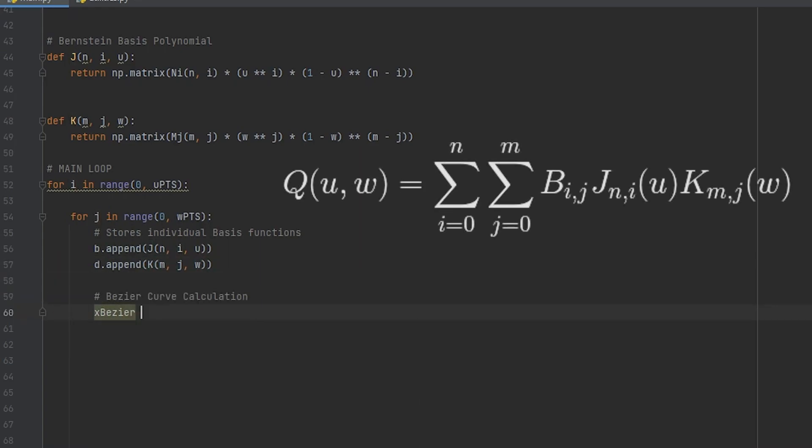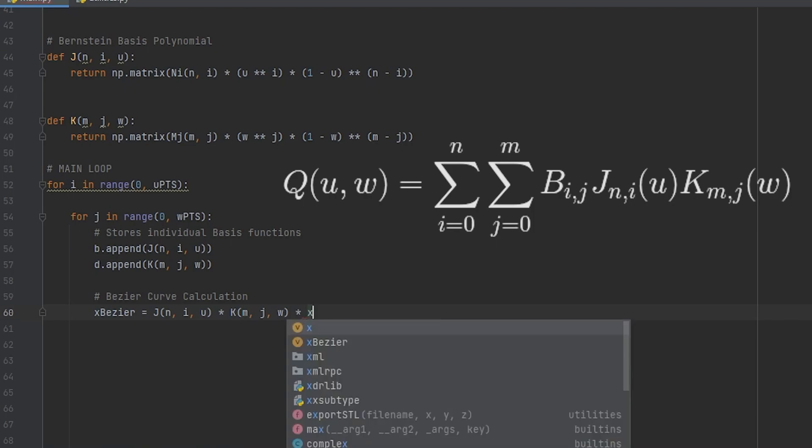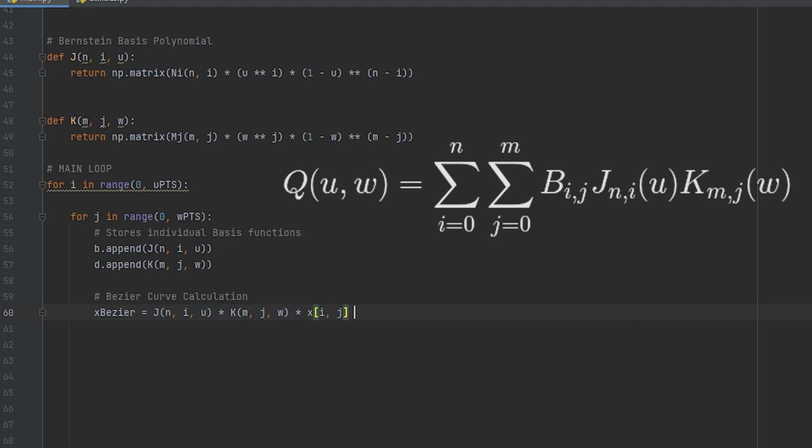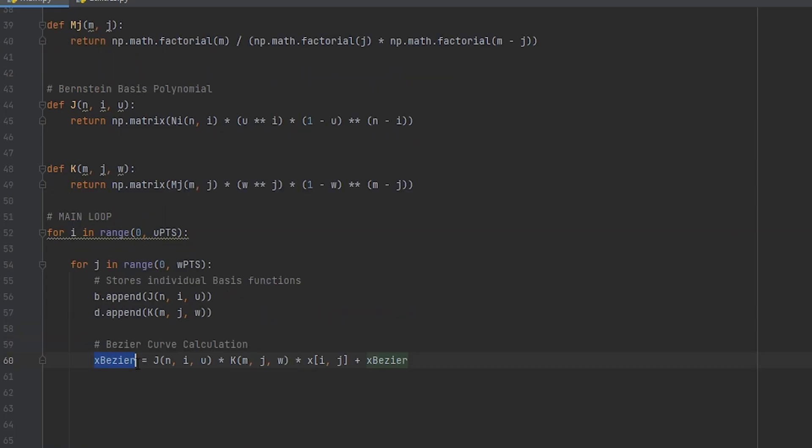We can write the Bezier surface matrices so we will update the matrices filled with zeros here as the loops go on. It would be x Bezier is equal to J times K times the x coordinate of the control point for that for loop and that plus whatever x Bezier that we have calculated up to this point. Before writing the equations for Y and Z pay attention to the multiplications between J and K both are one row arrays with different number of columns so you cannot multiply them.